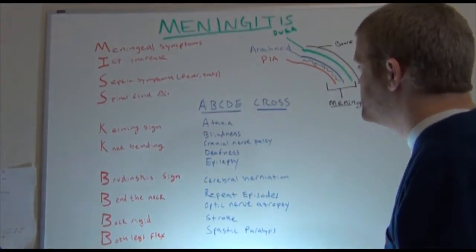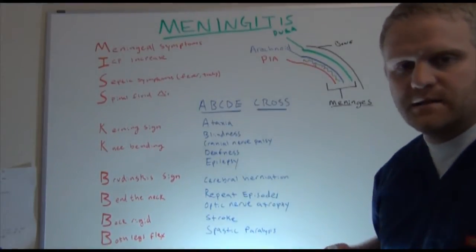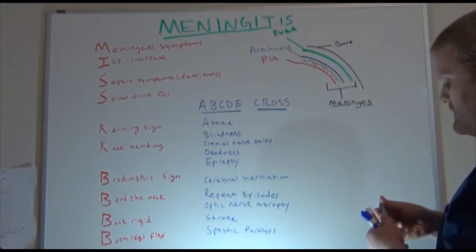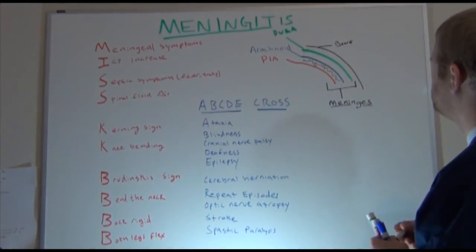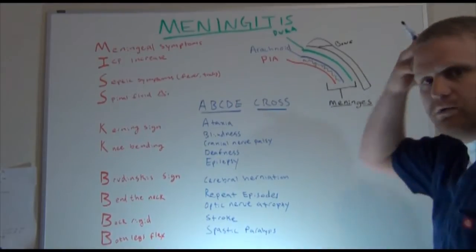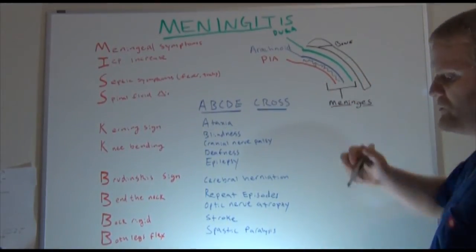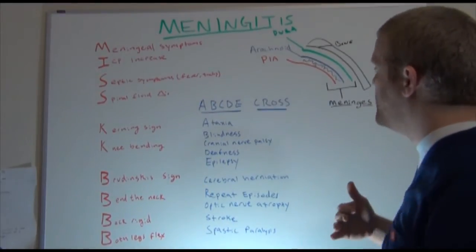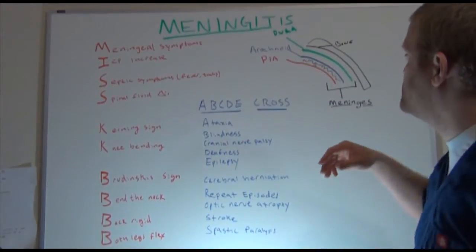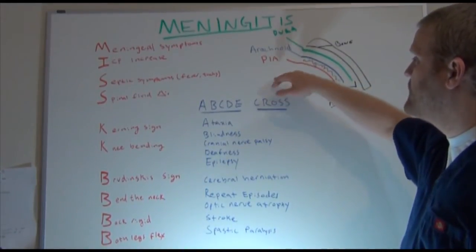Our topic is meningitis. Before we talk exactly about what meningitis is, we need to talk about what the meninges are. This little diagram here — the black here is your skull, the actual bone in your skull. Below your skull you have three different layers. The three layers before you actually get to brain tissue are going to be your dura mater, your arachnoid, and your pia mater.